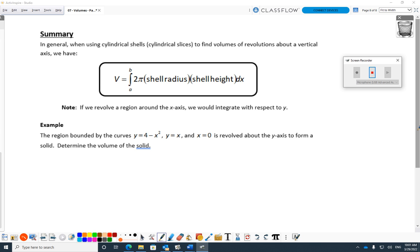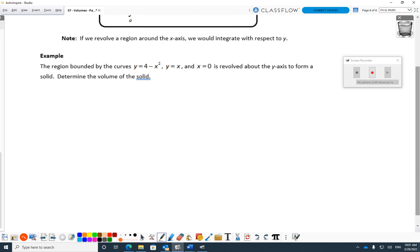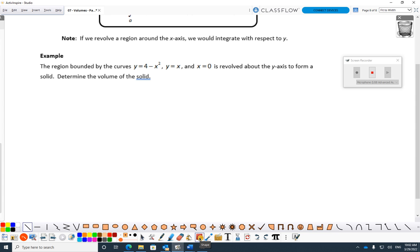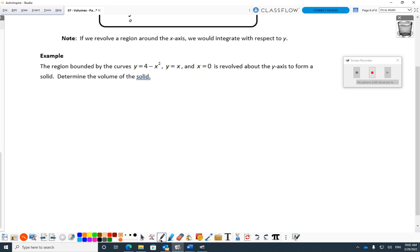One more example. Let me scroll down and do this example. The region bounded by the curves 4 minus x squared, y equals x. I need a really good picture here. I've got to be careful or else you won't get the whole view of things. So here goes. 4 minus x squared. There's 4 minus x squared. Y equals x. And x equals 0.